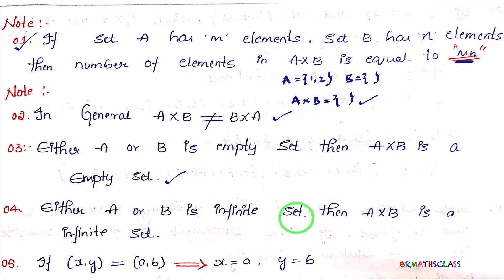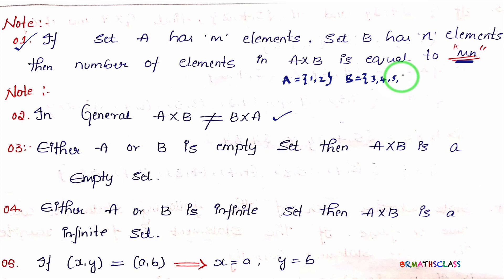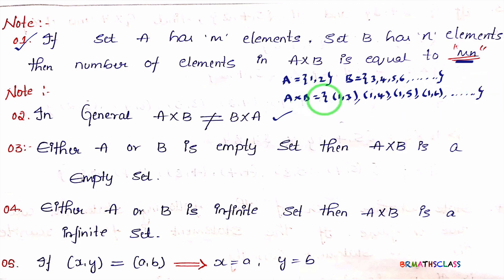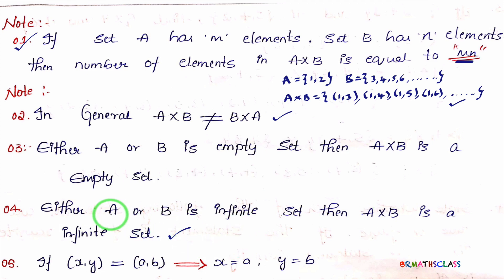Point 4: If either A or B is an infinite set, then A cross B is also an infinite set. For example, set A is {1, 2} and set B is {3, 4, 5, 6, ...} — an infinite set. Then A cross B gives ordered pairs 1 comma 3, 1 comma 4, 1 comma 5, 1 comma 6, and so on — it continues indefinitely. So A cross B is also an infinite set.